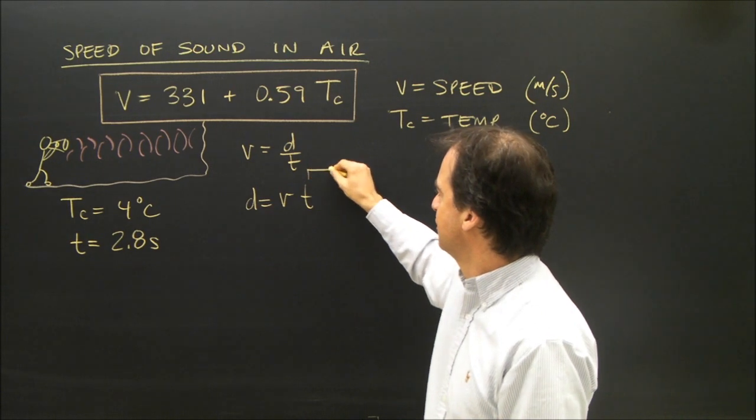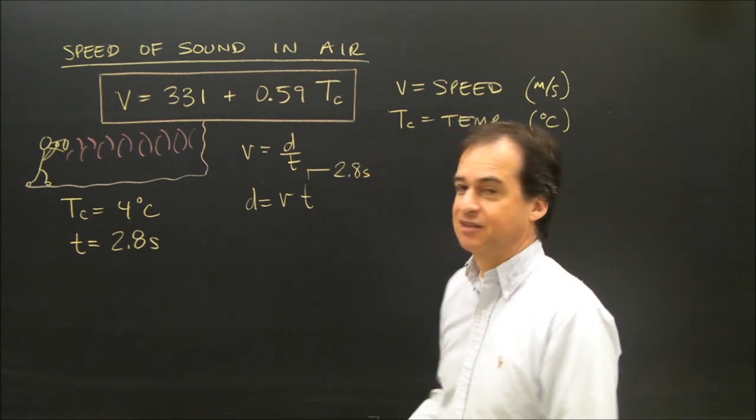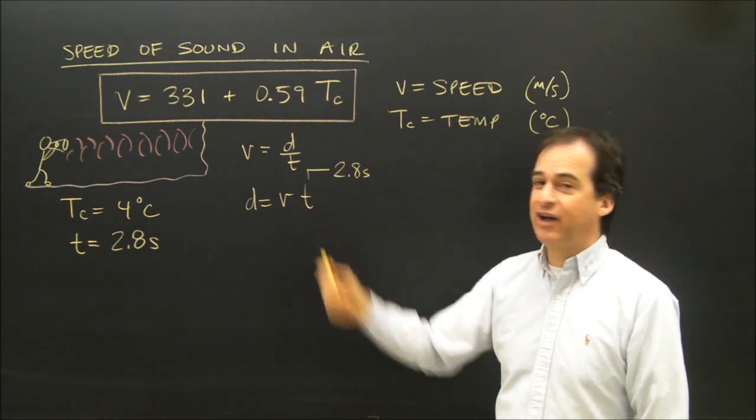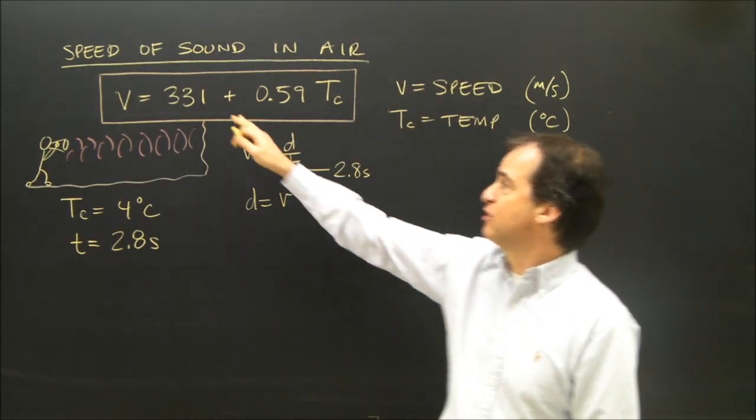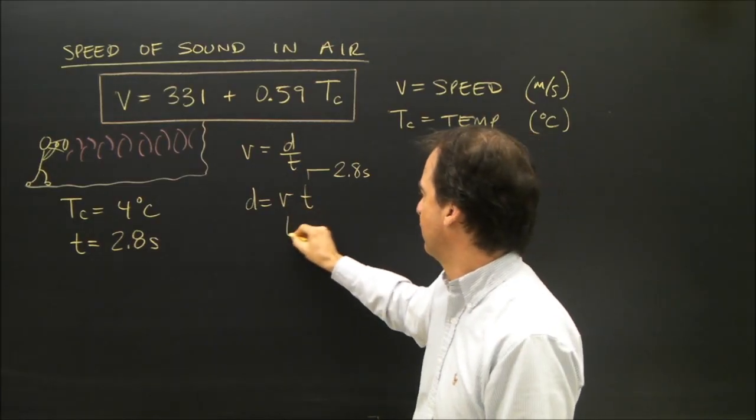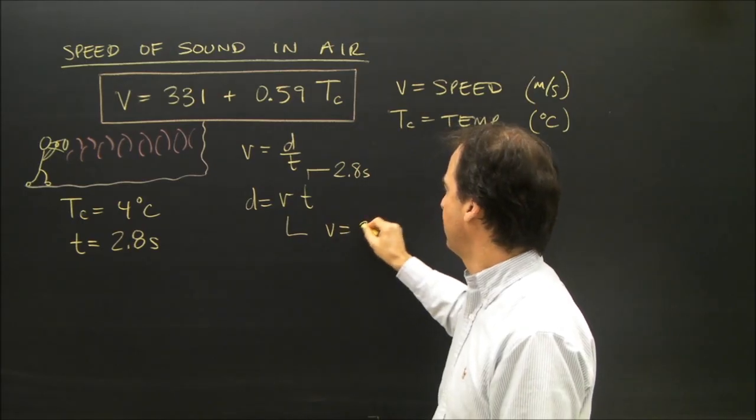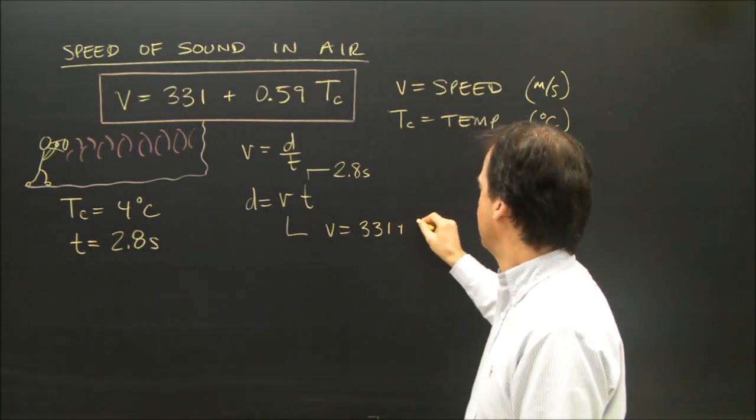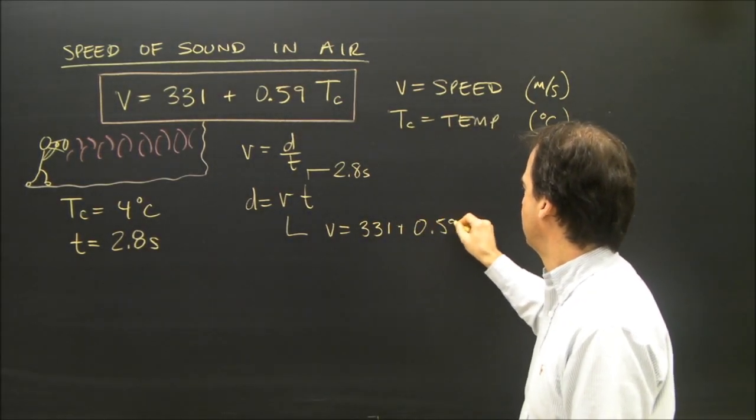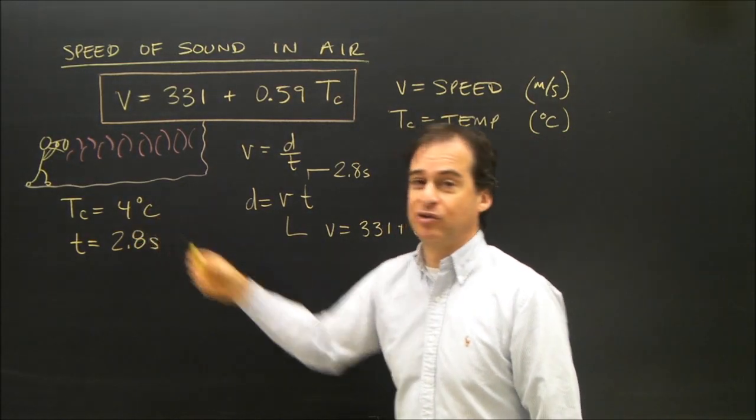I know this was 2.8 seconds, that's how long the waves were travelling. But how fast were they travelling? Well, that's where this formula might come in. I need to know how fast the waves are travelling. V equals 331 plus 0.59 times the temperature in degrees Celsius, 4.